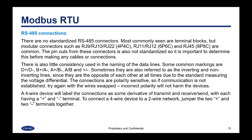With RS-485 there are no standardized connectors. Most commonly seen are terminal blocks, but modular connectors such as RJ-9, RJ-10, RJ-22 (a four-position modular connector similar to a handset jack on an old telephone), RJ-11, RJ-12 (a six-position connector similar to a telephone jack), and RJ-45 (similar to an ethernet connector) are common. The pin-outs from these connectors are also not standardized, so it is important to determine this before making any cables or connections. There is also little consistency in the naming of the data lines — common markings include D+ or D-, B+ with A-, A+ and B-, AB, or just + and -. Sometimes they are referred to as the inverting and non-inverting lines, since they are the opposite of each other at all times due to the standard measuring of the voltage differential.